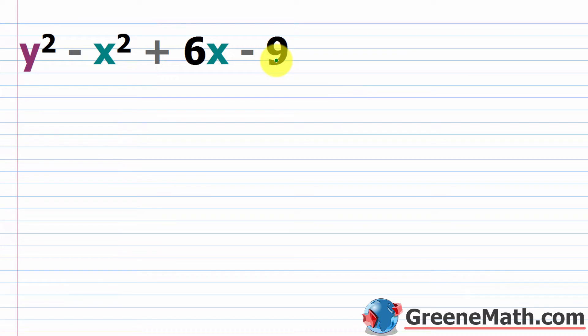So this is another one that's a little bit tricky. If you have a four-term polynomial, in most cases you want to try grouping first. You'll see that grouping isn't going to get you anywhere here.